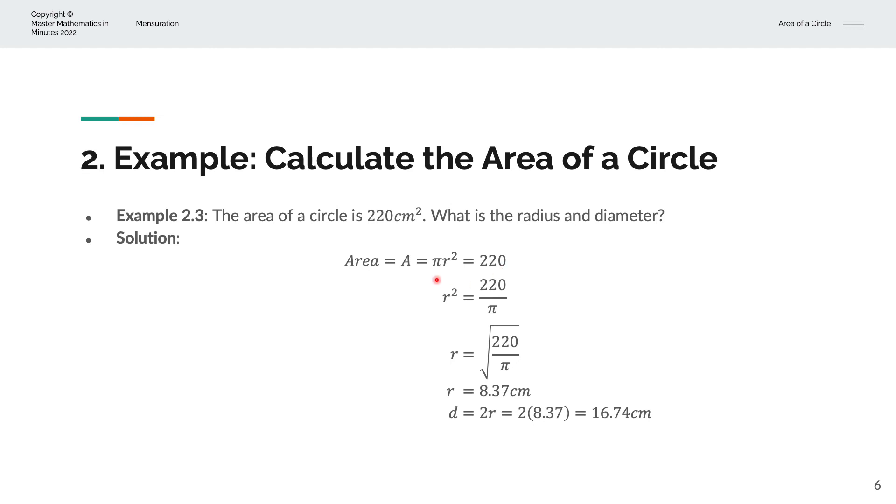And we'll bring the π to the right hand side. That becomes 220 divided by π. Copy the r squared down. And solving for r, that is equal to the square root of 220 divided by π. And r is 8.37 centimeters. And we've found the radius.